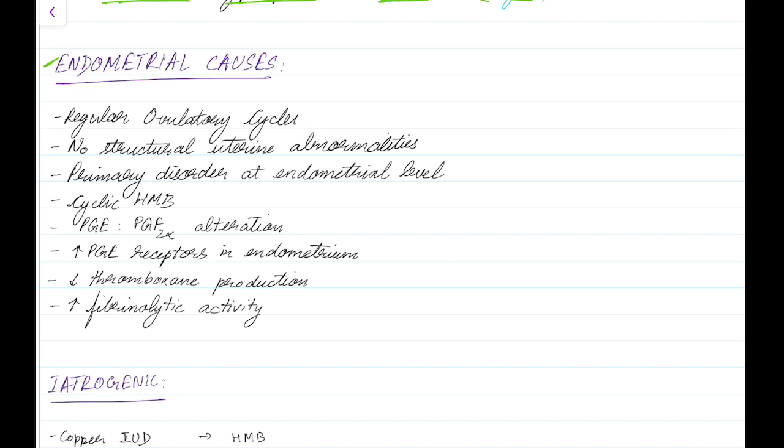Endometrial causes should be suspected in women with regular ovulatory cycles and when no structural uterine abnormalities are detected. In this case, the primary disorder is at the endometrial level, and it can lead to cyclical heavy menstrual bleeding. The mechanism involves an alteration in the PGE2 to PGF2-alpha ratio, leading to increased PG receptors in the endometrium, decreased thromboxane production (a vasoconstrictor), and increased fibrinolytic activity, causing defective coagulation.